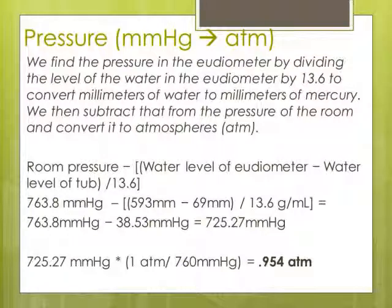For the pressure of carbon dioxide gas, we take the difference in water height of the eudiometer with the water height of the tub. We divide by 13.6 because mercury is 13.6 times as dense as water, and this converts millimeters of water to millimeters of mercury. Then we subtract the difference from the room pressure to get the pressure inside of the eudiometer and convert the units from millimeters of mercury to atmospheres.